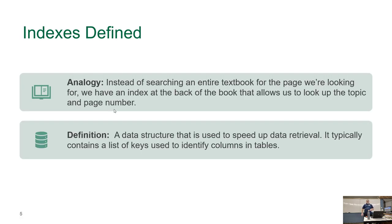The textbook analogy: in a textbook you have an index at the back, so if you're trying to find a specific topic, you look it up and it says you'll find it on pages 56, 60, and 85. You go look through those three pages. Without that index and without a table of contents, looking through books would be really, really slow.